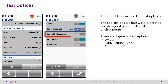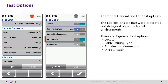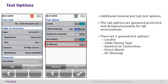Auto Test on Connection: as soon as the local and remote units are connected, an auto test will start. This option is disabled by default. Direct Attach is for testing direct attach permanent links, and is also disabled by default. AC Wiremap allows you to take measurements of runs with Power over Ethernet mid-span devices in between, and is disabled by default.